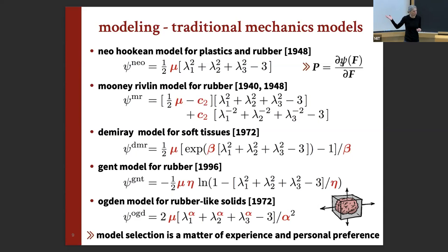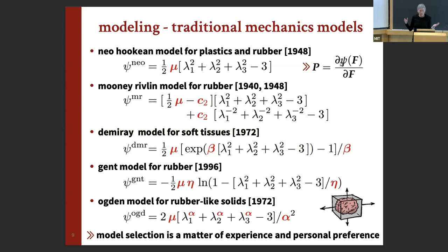What I'm trying to show in the next few minutes is how we can circumvent model selection altogether — and never have to select a model ourselves again. If this works, you would never need a continuum mechanics class to select models. It would put some people out of work.